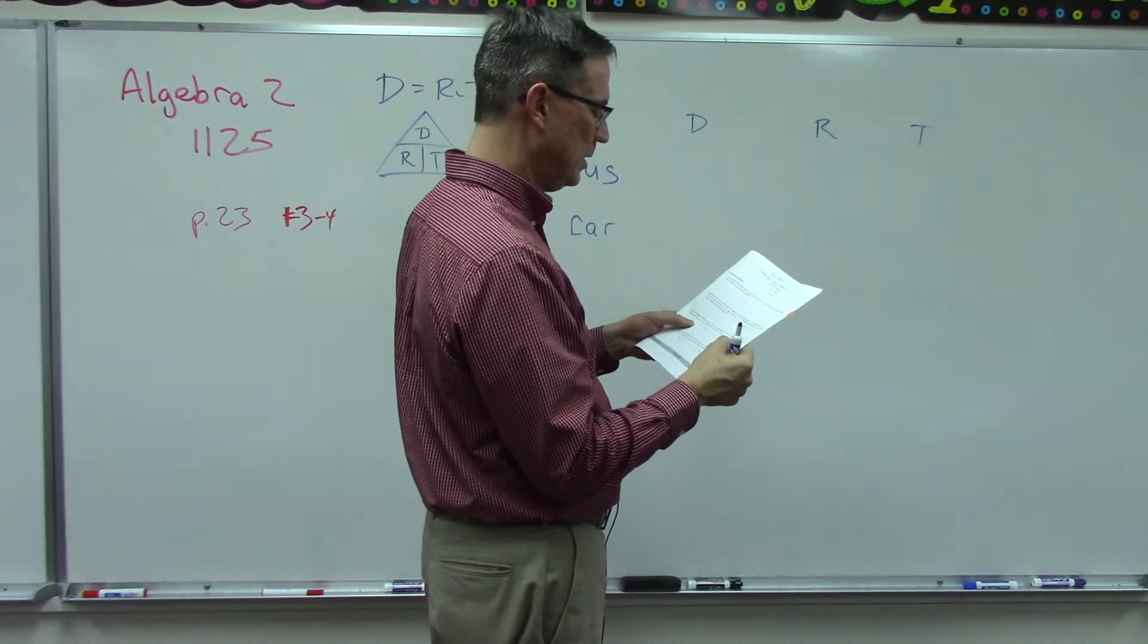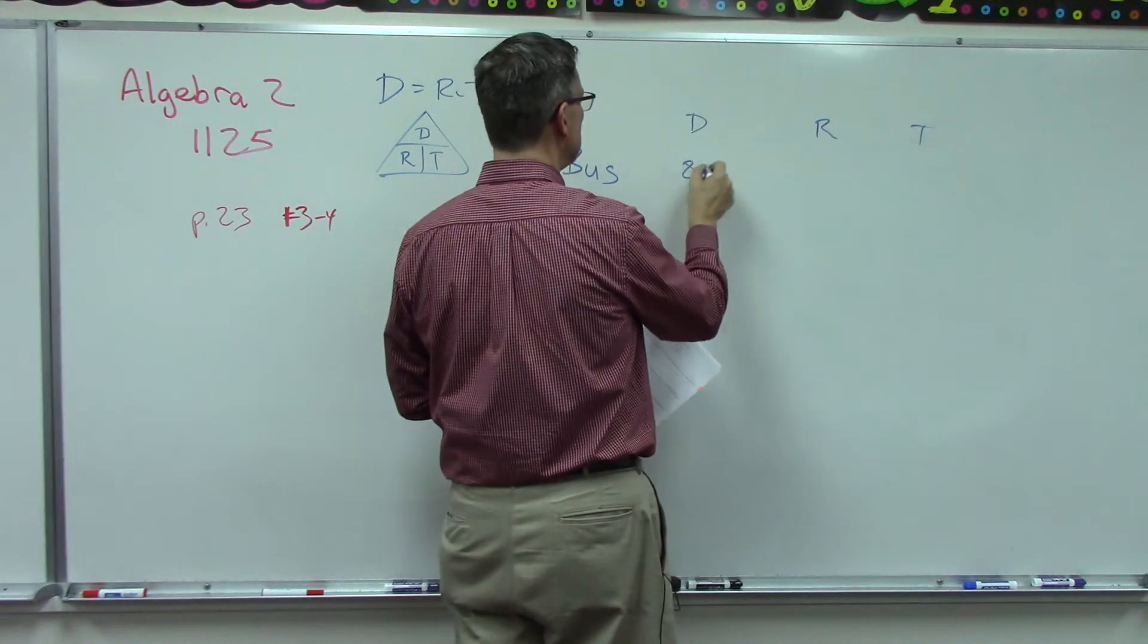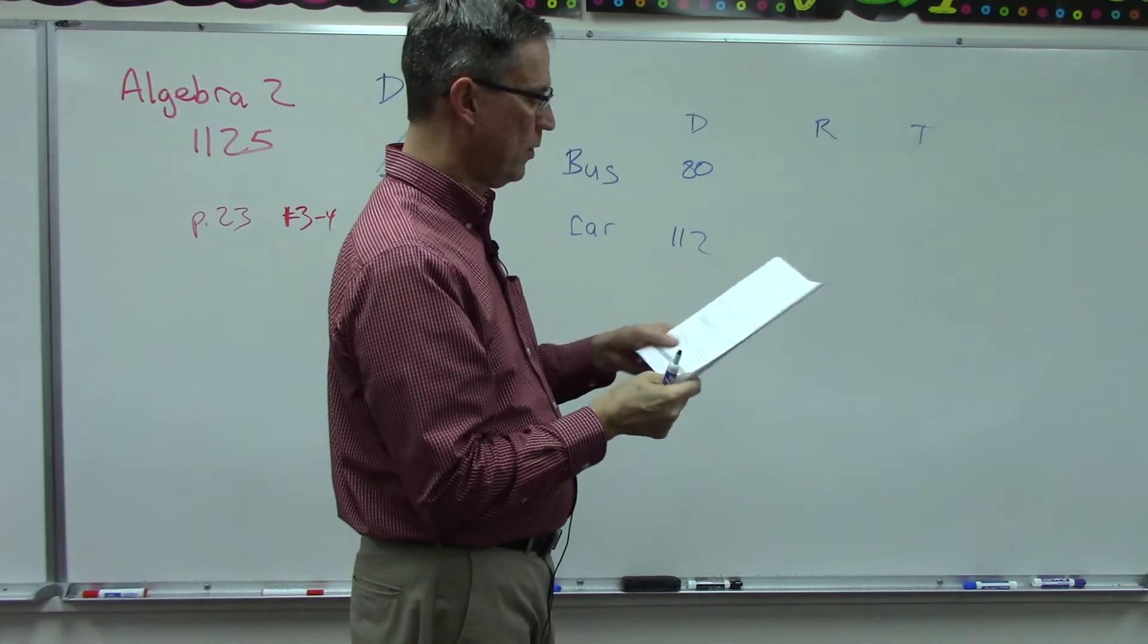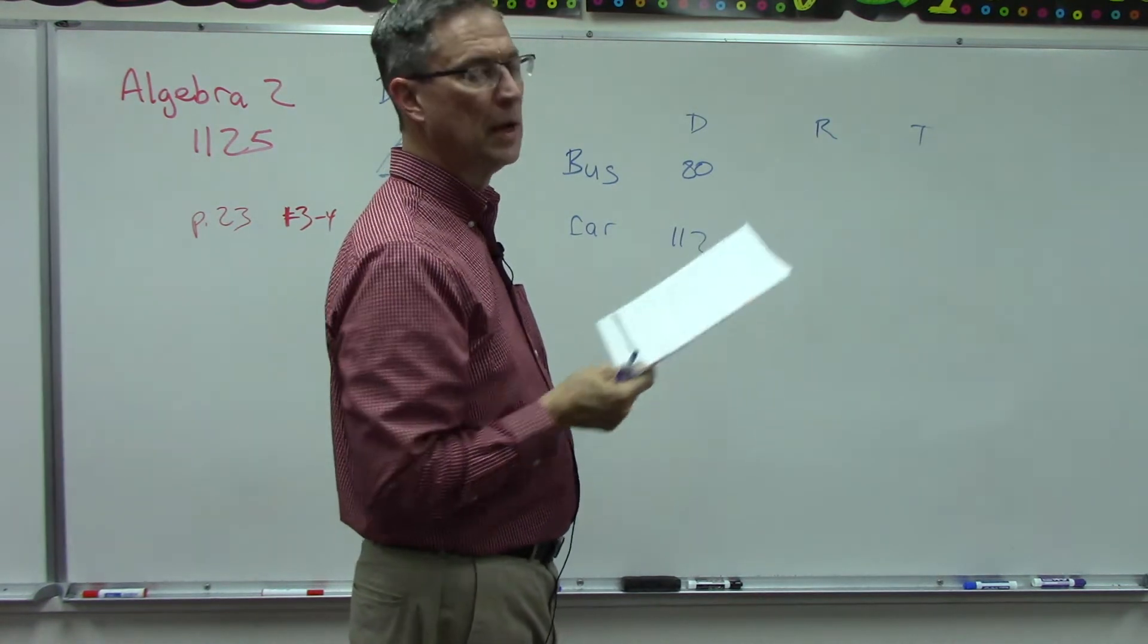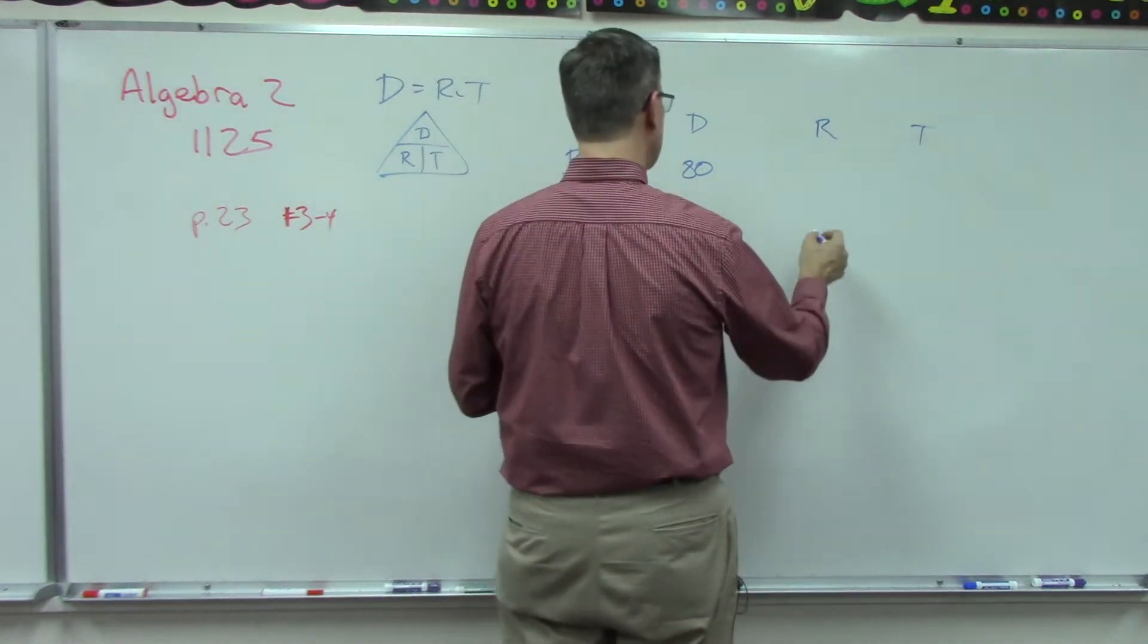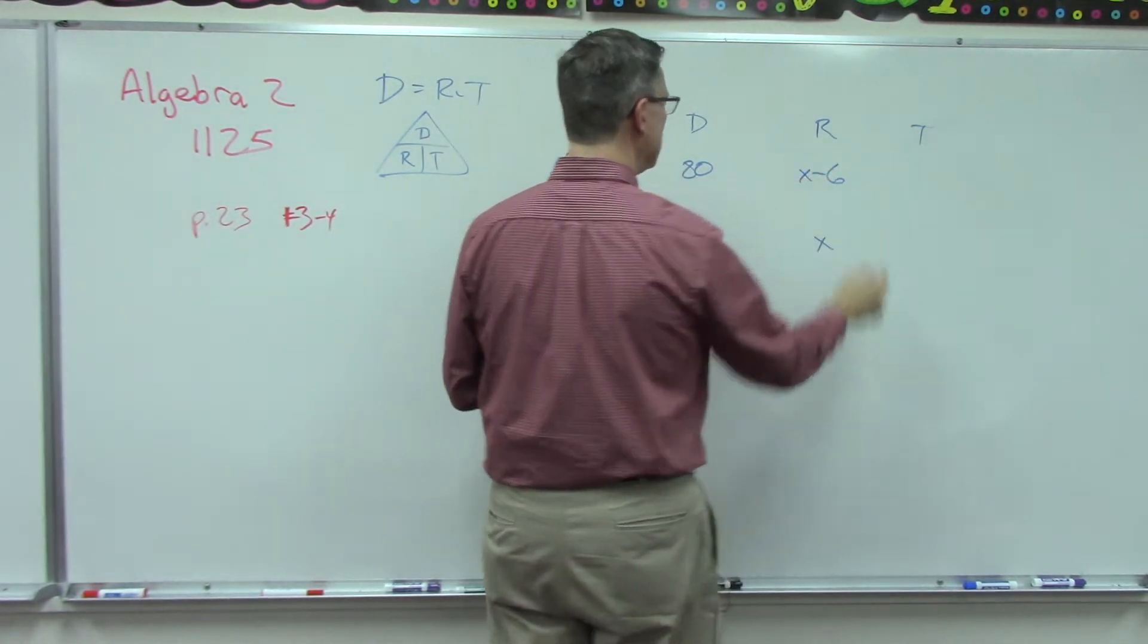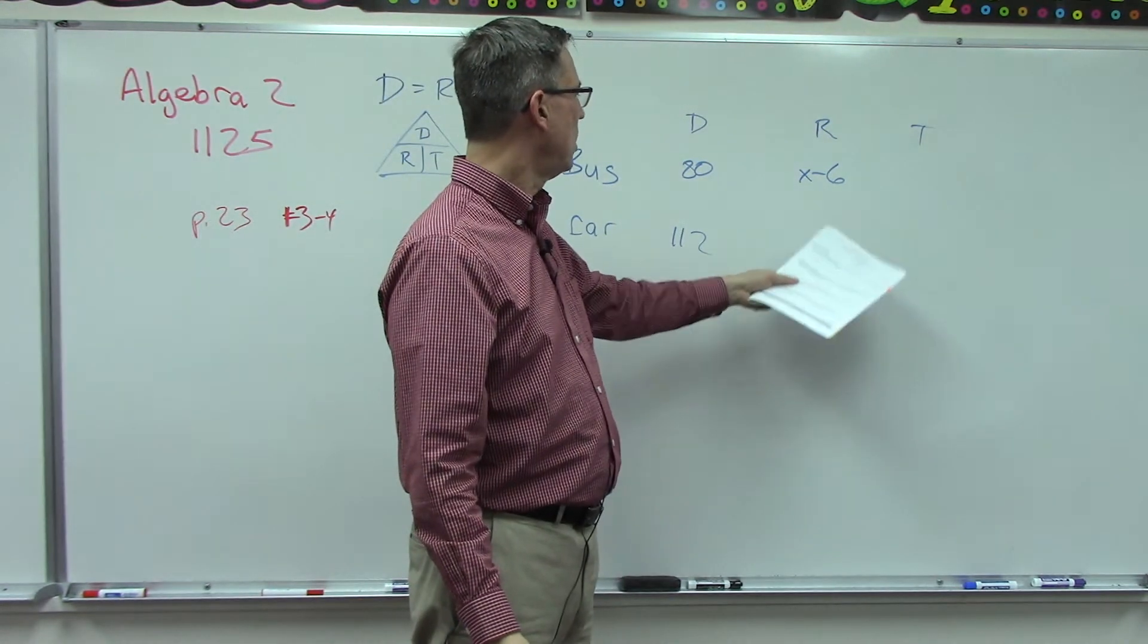We have bus, we have car, we have distance, rate, and time. The bus travels a distance of 80 kilometers, so the distance of the bus is 80. The distance of the car is 112. The bus averages six kilometers per hour less than the passenger car, so we could say x here and x minus six.